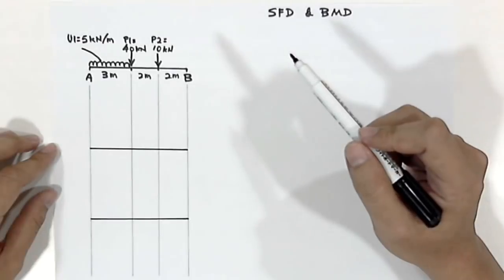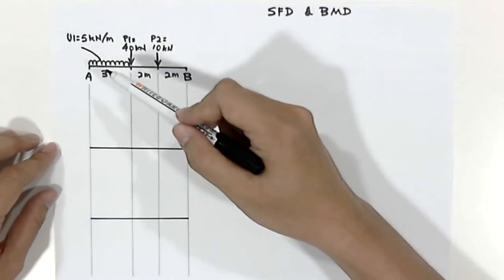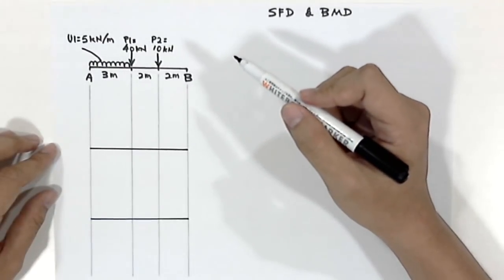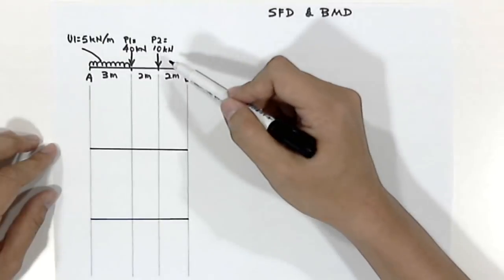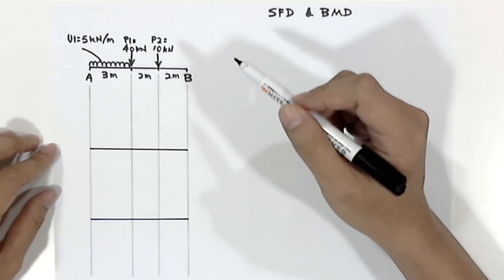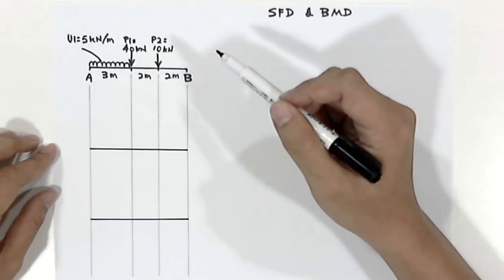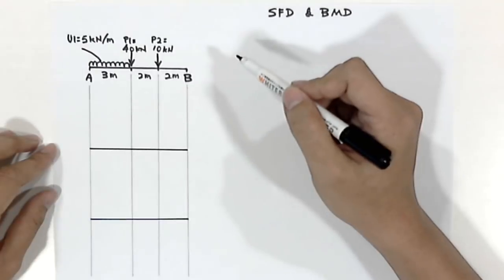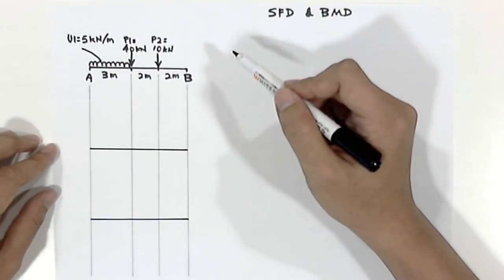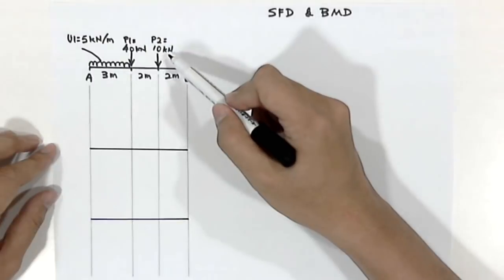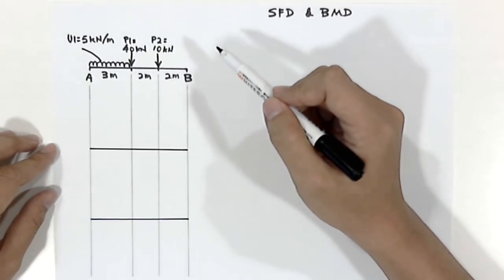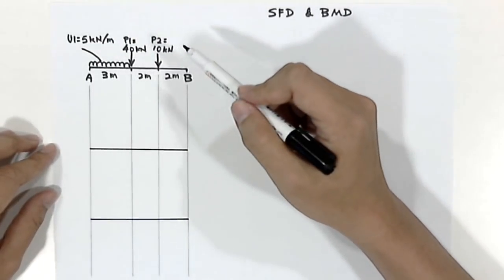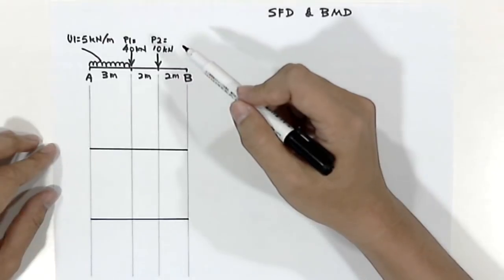We have a simply supported beam, point A and point B, with a span of 7 meters. On this beam, it has 3 loads. The first load will be P1, point load 1, which is 40 kN. We have point load 2, 10 kN, and we have a uniform load U1 with a value of 5 kN per meter.